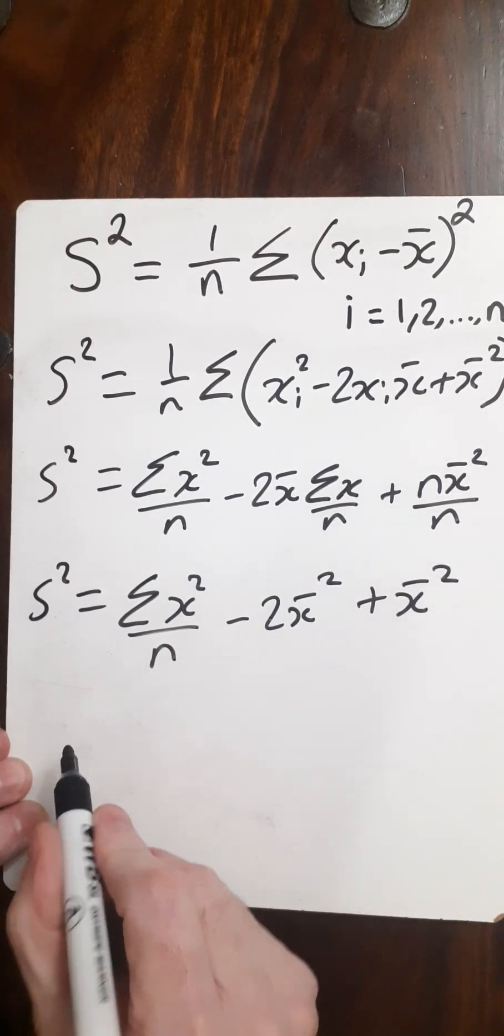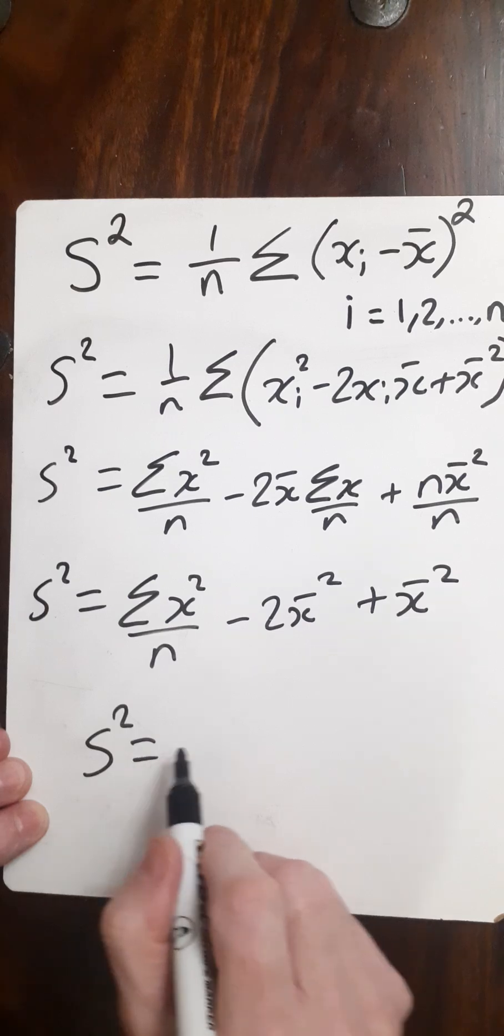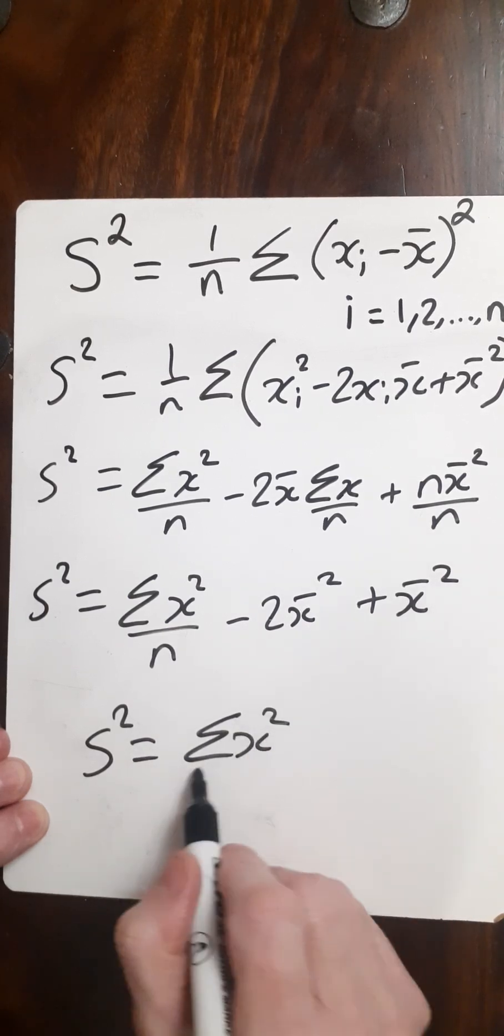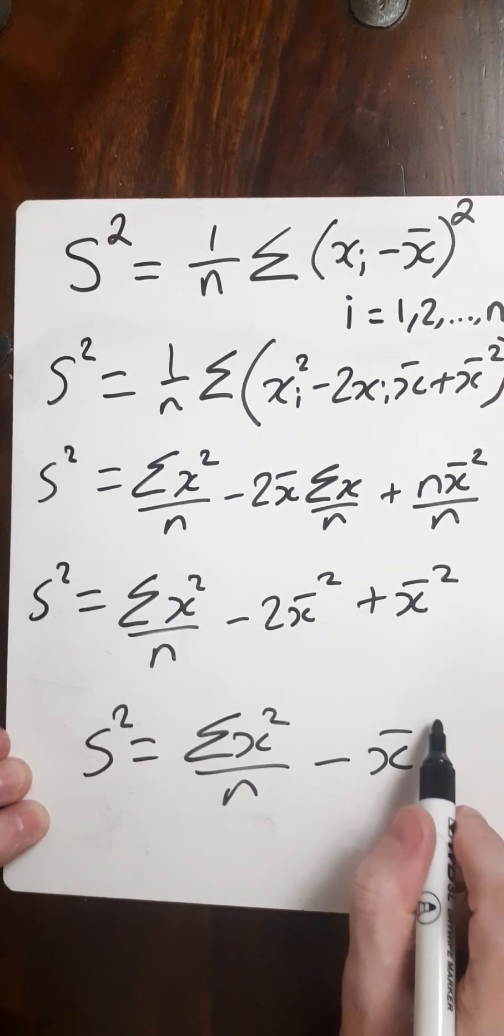Now these two are the same, which becomes a minus. So my variance equals the sum of all the xi squareds over n minus the mean squared.